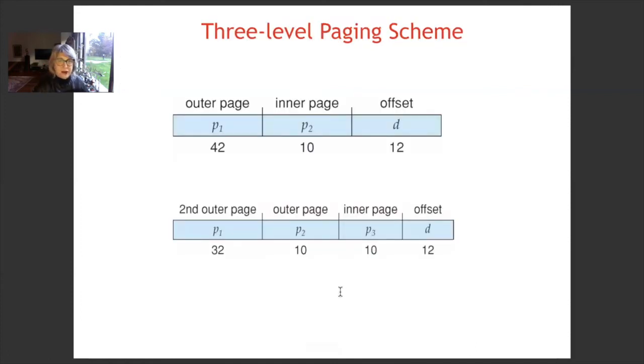So, we have, if we have two-level paging scheme, then p1 is 42 bits, as we considered just in the previous slide. So, instead of using 42 bits for the p1, we can divide p1 into two pieces. So, we will have three-level paging scheme.